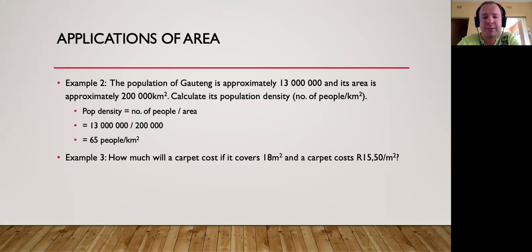For example, how much will a carpet cost if it covers 18 meters squared and the carpet costs 15 rand 50 per meter squared? When you work out the total cost of something like this, you end up multiplying the area by the rate, so here we will say 18 times 15 rand 50, which will give you a cost of 279 rand.